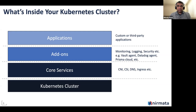The next set of components you need are typically what we call add-ons. Some examples are monitoring, logging, and security add-ons — typically shared across your applications, though in some cases they may be application-specific. Examples include Vault agent, Datadog agent, Prisma Cloud, Sumo Logic — there are several of these that are typically part of any Kubernetes cluster. And finally, the applications themselves, whether custom or third-party.